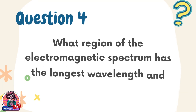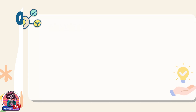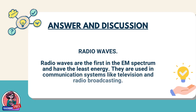Question 4. What region of the electromagnetic spectrum has the longest wavelength and lowest frequency? Answer: radio waves. Radio waves are the first in the EM spectrum and have the least energy. They are used in communication systems like television and radio broadcasting.